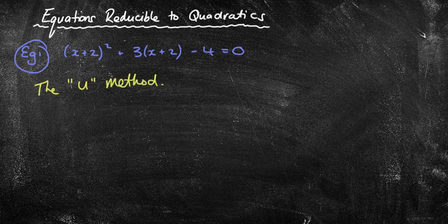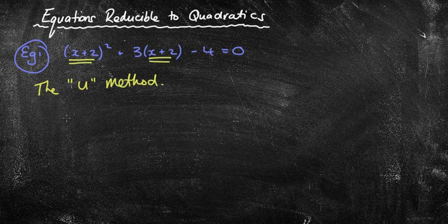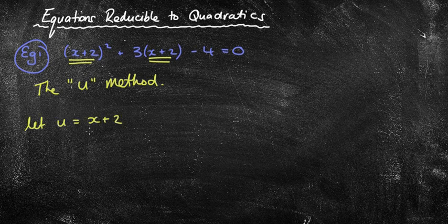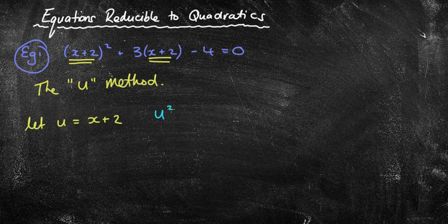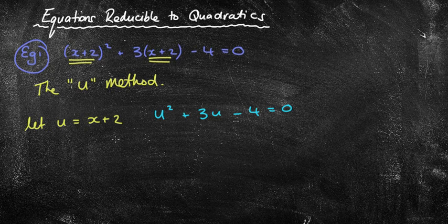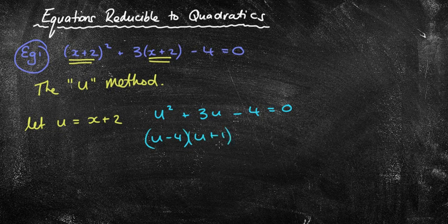Sometimes if I recognize that something's the same in both terms, we can substitute that value or particular term for u. For example, I'm going to say let u = x + 2. And it's important that you actually write that, let u = x + 2. So what that now means is I'm going to put the u where the x + 2 was, so I'm going to get u² + 3u - 4 = 0, which now turns into a relatively straightforward quadratic equation. I'm going to factorize it and solve it that way. I'm going to get (u + 4)(u - 1) equals zero.